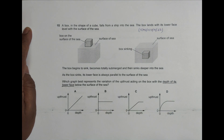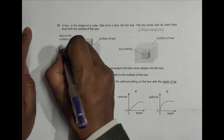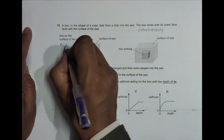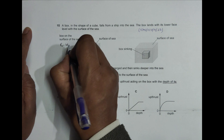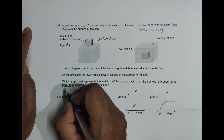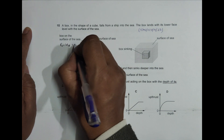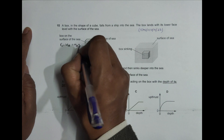The first thing we need to remember is that the force of upthrust is equal to the weight of liquid displaced, and that equals the mass of liquid displaced into G.